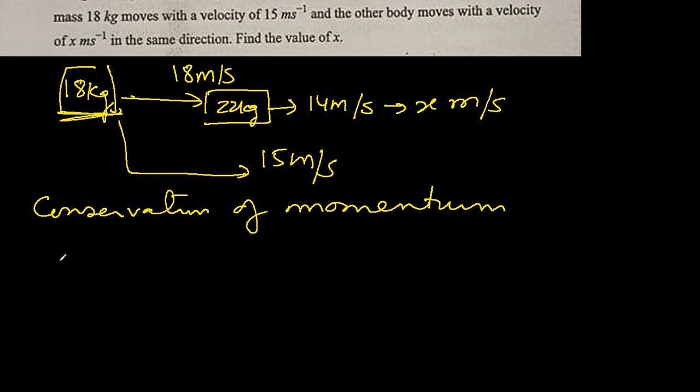According to conservation of momentum, m1u1 plus m2u2 equals m1v1 plus m2v2. This is the initial velocity u for m1, initial velocity for m2, and these are final velocities.